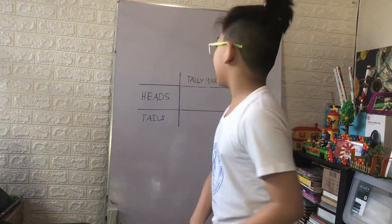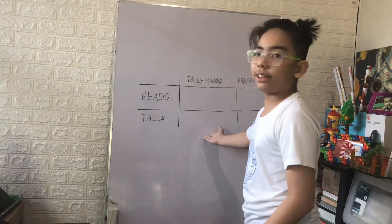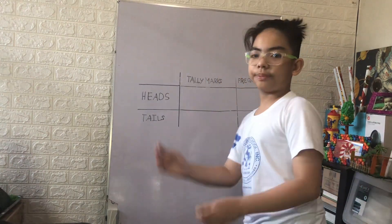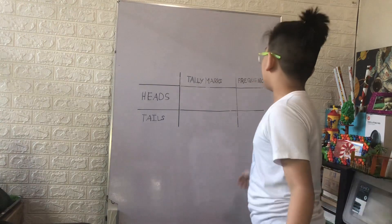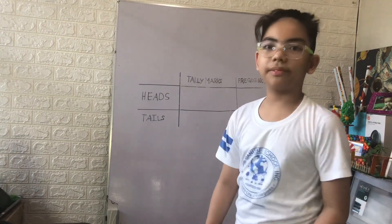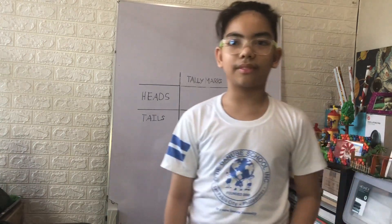For this, we will toss a coin 15 times and record its outcomes using our frequency table. The materials needed for this video are a 1 peso coin, a marker, and our frequency table. Let's go!